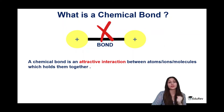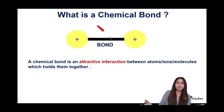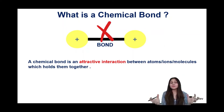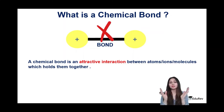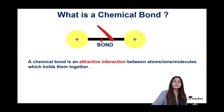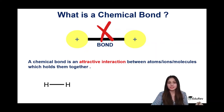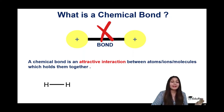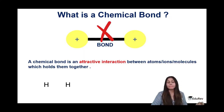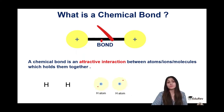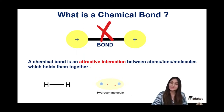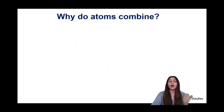A chemical bond is just an interaction — an attractive interaction which is holding a molecule together. We all know how atoms combine to form molecules. These molecules are held together with the help of attractive interactions called chemical bonds. We might represent a hydrogen molecule with a small line between the two hydrogen atoms, but this line actually represents an interaction between the two hydrogen atoms — that is what a chemical bond is.